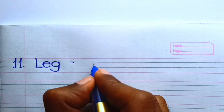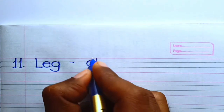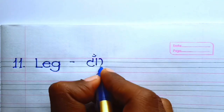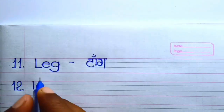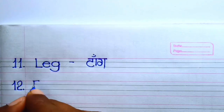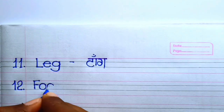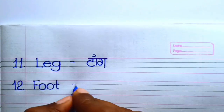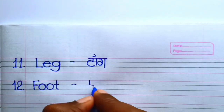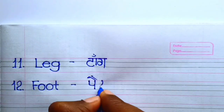Number 11. Leg — Leg means tongue. Number 12. Foot — Foot means bear.